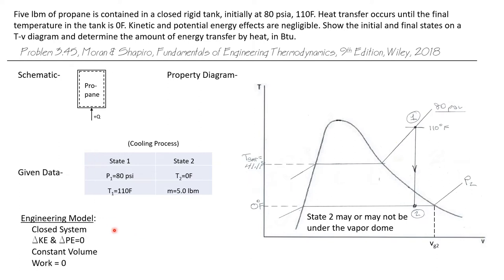Our engineering model is that we're modeling a closed system where delta KE and delta PE are assumed to be zero. It's a constant volume and a constant specific volume system. And since the tank has no mechanism for doing work, work for this process is zero. And what we want to find is the heat transfer that takes place between state one and state two.